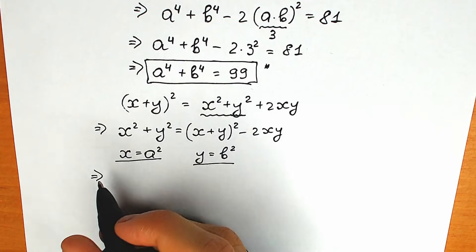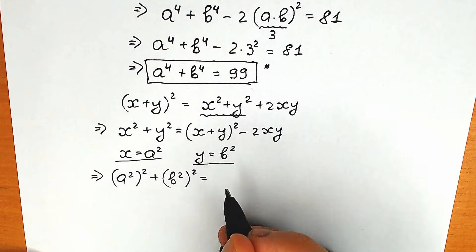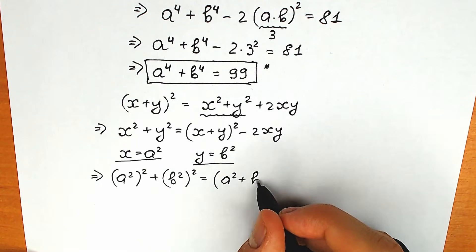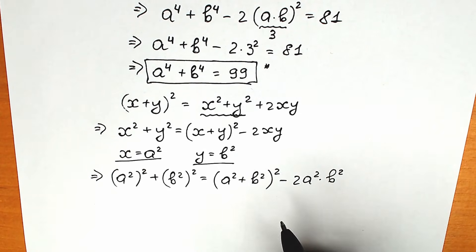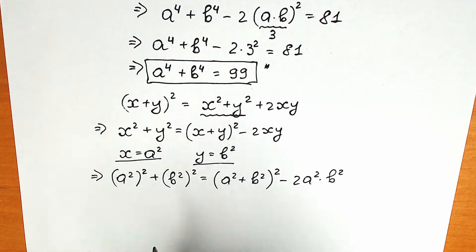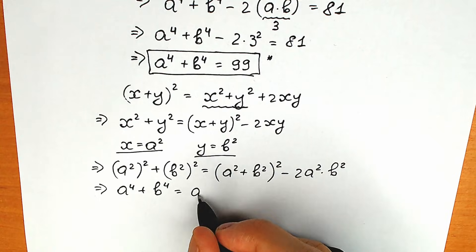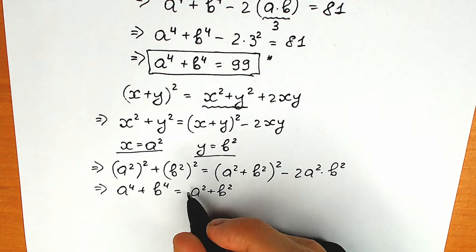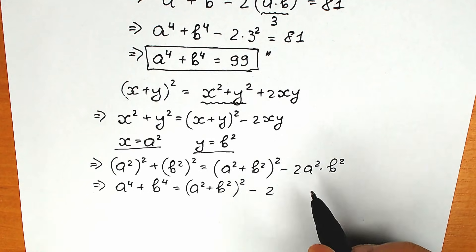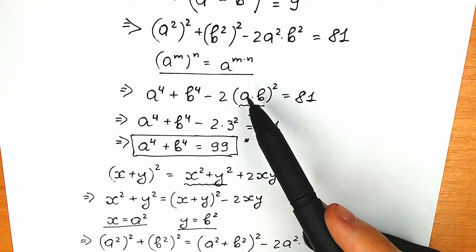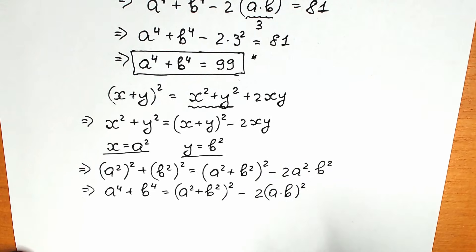Let's plug those in. We get a squared to the second power plus b squared to the second power, which equals (a squared plus b squared) raised to the second power, minus 2 times a squared times b squared. Now applying the power rule, a to the second raised to the second equals a to the fourth. So a to the fourth plus b to the fourth equals (a squared plus b squared) to the second power minus 2 times (a times b) to the second power.